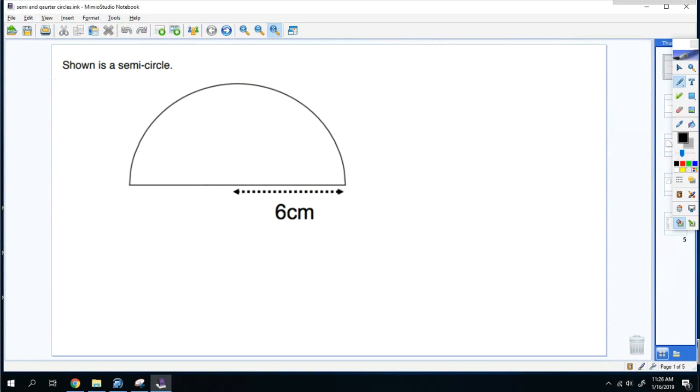Alright, so this video is over semicircles and quarter circle areas. First off, a semicircle is just half of a circle. The formula that we're used to is A = πr², which is the area of a full circle. Since we're doing half of it, we'll just divide by 2.